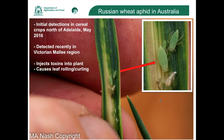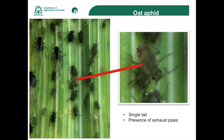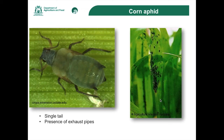This is the oat aphid — you can see some winged aphids in there, which are much harder to identify, so generally just go for the wingless version. The oat aphid has a very distinctive rusty patch at the top of the back end, and those cornicles — the exhaust pipes — are a good giveaway. In terms of the other common cereal aphid, the corn aphid, you can see it's quite different but also has those exhaust pipes. Really without a hand lens you're not going to be able to see these features.